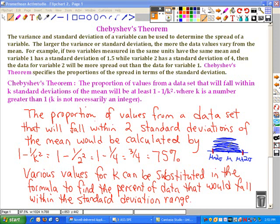The various values for k can be substituted in the formula to find the percent of data that would fall within k standard deviations of the range.